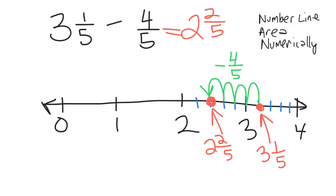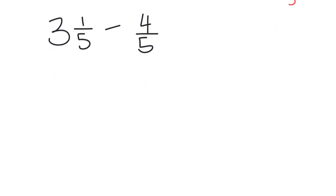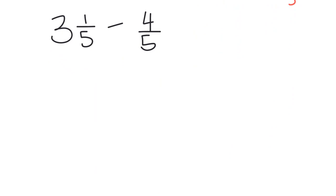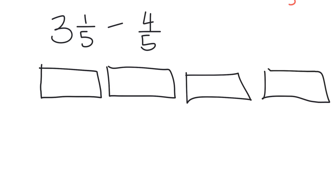We can use the area model as well. Now we're going to take a look at what three and a fifth minus four-fifths looks like using the area model. I'm going to quickly draw three and a fifth — there's one, two, three wholes. Now to represent the one-fifth, I'm going to chop that up into five equal-sized pieces — one, two, three, four, five — and shade in one of those fifths.